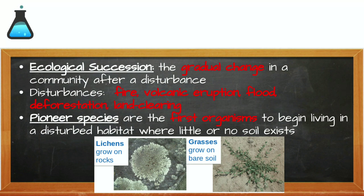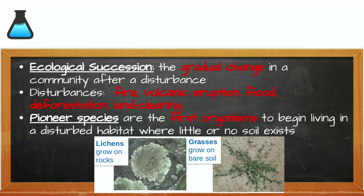Ecological succession is a gradual change in the communities that live in an ecosystem. This change happens after a disturbance, either natural or man-made. The disturbance could be fire or volcanic eruption, or deforestation, or the rerouting of water due to a dam or a flood. The first species that will inhabit an area after a great disturbance is called the pioneer species. Moss and lichen are common pioneer species because they do not have extensive root systems and they reproduce by spores. Spores are really lightweight and can easily be transported to an area.